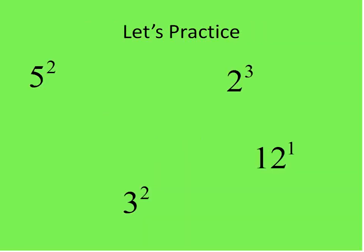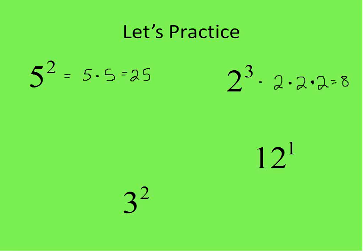Let's practice with some numbers so we can see exactly what we're talking about. 5 to the power of 2 is 5 times 5, which is equal to 25. So 5 to the power of 2, 5 multiplied 2 times, gives us 25. Then 2 to the power of 3 means 2 times 2 times 2. The number 3 up here means how many times we're multiplying the base times itself — and 2 times 2 times 2 is 8. So 2 to the power of 3, or 2 cubed, is 8.